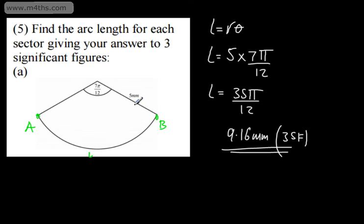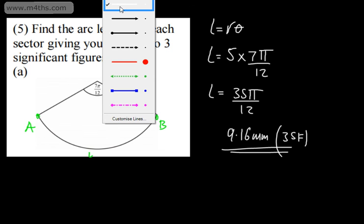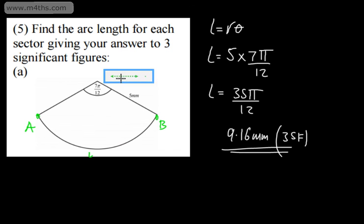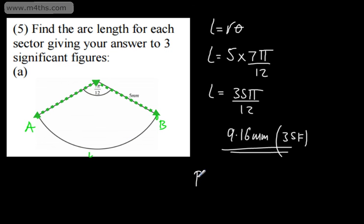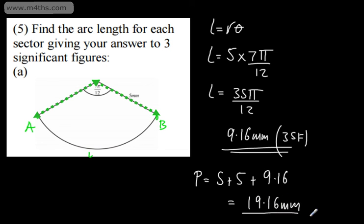If we were asked for the perimeter of this sector, we simply add the radius twice to the arc length. The perimeter is 5 plus 5 plus 9.16, which gives 19.6 millimetres. So the arc length and the perimeter of the sector are different things.